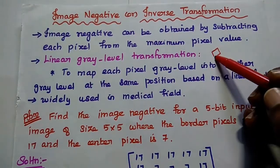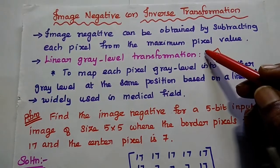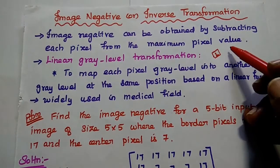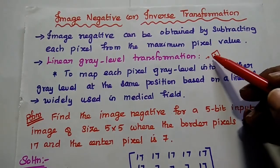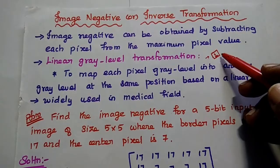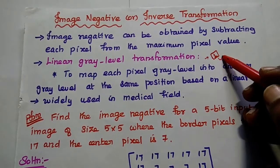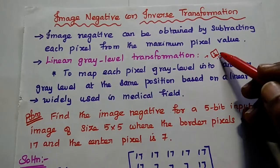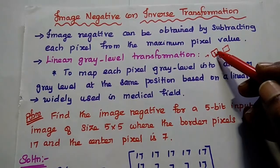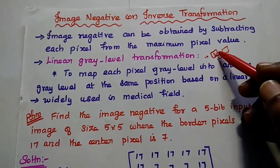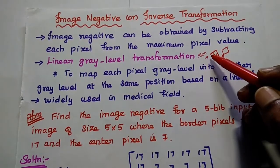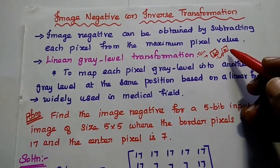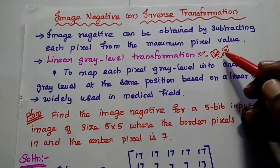If we take a binary image where 1 represents white and 0 represents black, and that binary image is given as input, taking the image negative means we need to convert 1 into 0. To convert 1 to 0, we subtract the pixel value from the maximum value of that image. For a binary image, the maximum pixel value is 1, so 1 minus 1 equals 0. This concept applies to binary images.